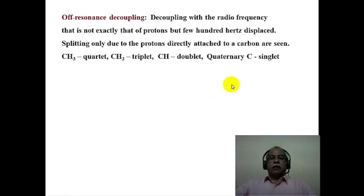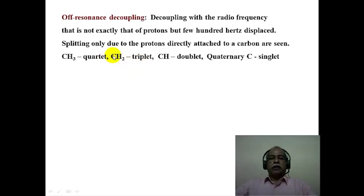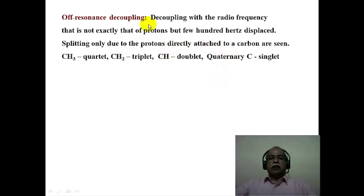Another technique used in carbon-13 spectroscopy is off-resonance decoupling, where the proton decoupling frequency is offset by a few hundred hertz. Only the splitting due to directly attached protons is retained. A methyl group appears as a quartet, a CH₂ group appears as a triplet, an unsubstituted aromatic CH carbon appears as a doublet, and quaternary carbons (bearing no hydrogen) appear as singlets. From the multiplicity, one can identify whether a carbon is CH₃, CH₂, CH, or quaternary.